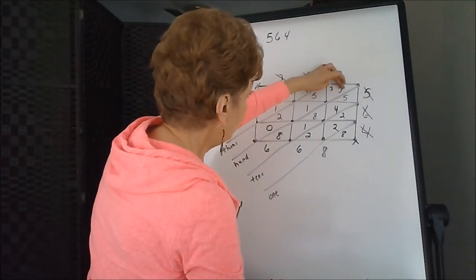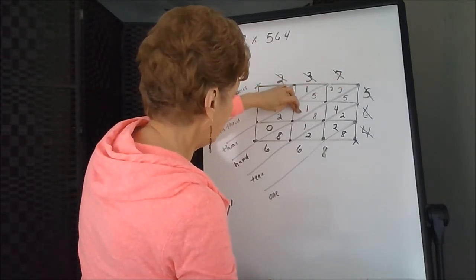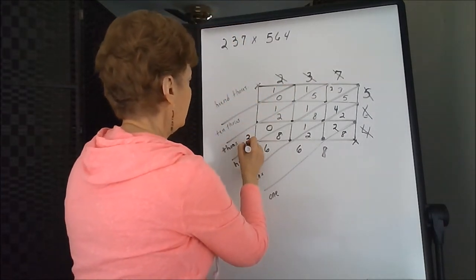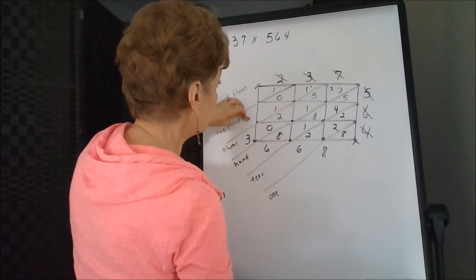Two plus three is five. Five and five is ten. Here's eleven. Thirteen. Put down the three. We're going to carry the one to the ten thousandths column.